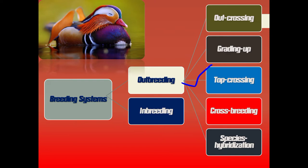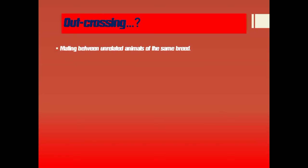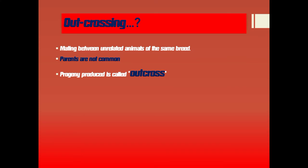The very first type is outcrossing. Outcrossing refers to mating between unrelated animals of the same breed, meaning they are not sharing common ancestors. The progeny produced by outcrossing is called an outcross. This is the simplest form of outbreeding.